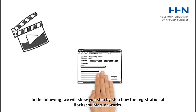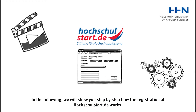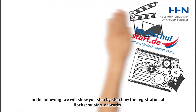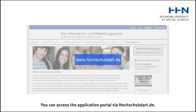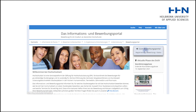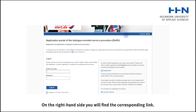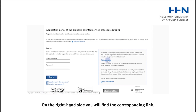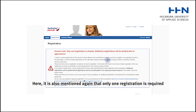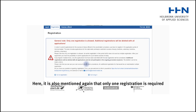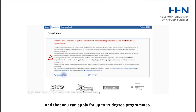In the following, we will show you step by step how the registration at Hochschulstart.de works. You can access the application portal via Hochschulstart.de, then a new tab will open where you can complete your registration. On the right-hand side, you will find the corresponding link. It is also mentioned that only one registration is required and that you can apply for up to 12 degree programs.